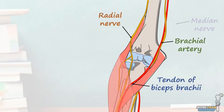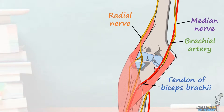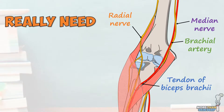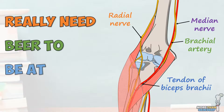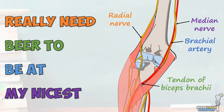There are lots of mnemonics to help remember the contents of the cubital fossa from lateral to medial, but the one most often used is the phrase: 'I really need beer to be at my nicest.' Where 'really need' stands for radial nerve, 'beer to' stands for biceps tendon, 'be at' stands for brachial artery, and 'my nicest' stands for median nerve.